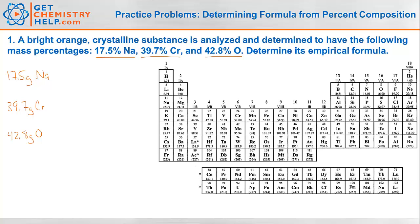The empirical formula is not the mass ratio — it's the simplest whole number mole ratio. So we need to turn mass into moles using molar mass. The molar mass of sodium is 22.99 grams per mole, so dividing 17.5 grams by 22.99 gives me 0.761 moles of sodium.